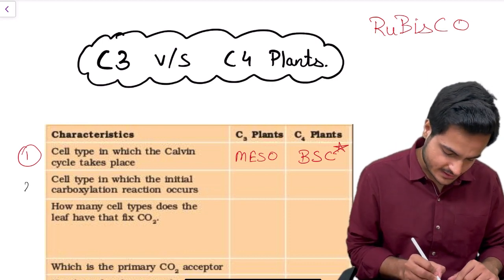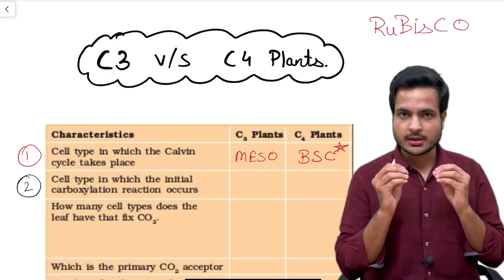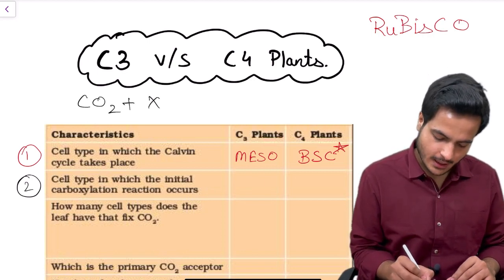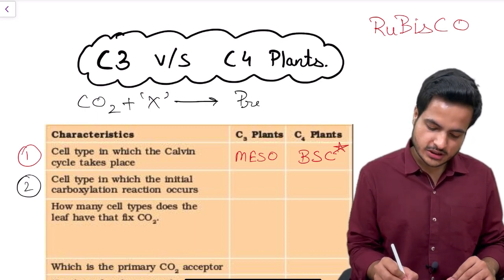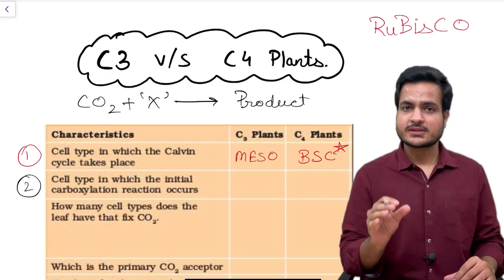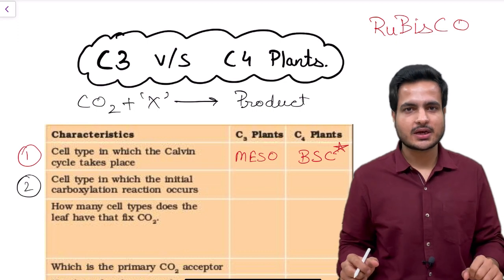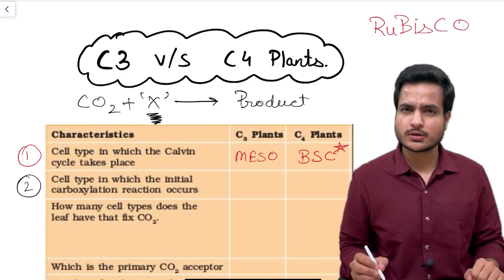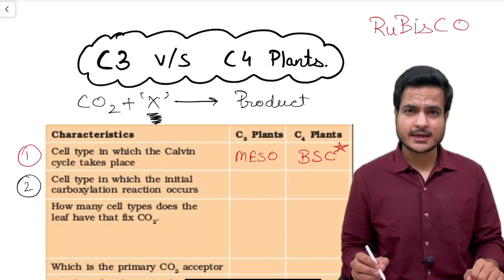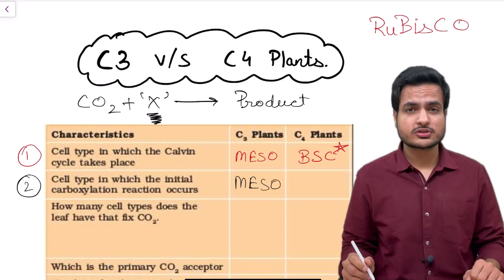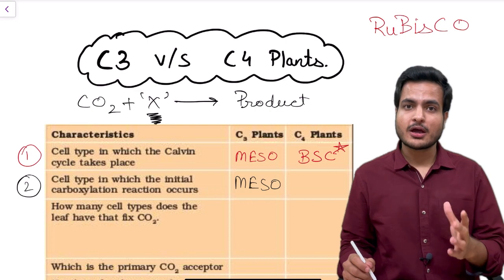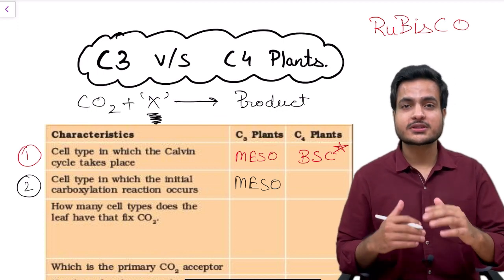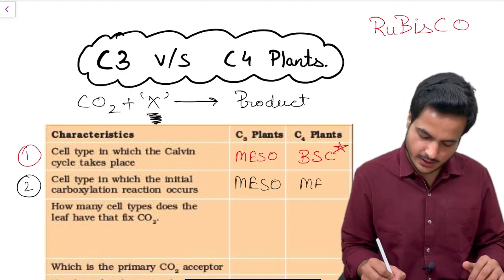The second point asks about the cell type in which initial carboxylation reaction takes place. Carbon dioxide fuses with the primary carbon dioxide acceptor and forms a product called the primary carbon dioxide fixation product. In C3 plants, this primary acceptor is a 5-carbon keto sugar called ribulose bisphosphate (RuBP), and the reaction takes place in mesophyll cells. In C4 plants, the carbon dioxide acceptor is phosphoenol pyruvate (PEP), and this first carboxylation reaction also takes place in mesophyll cells of C4 plants.